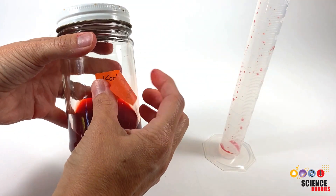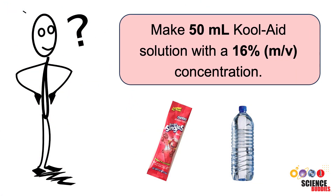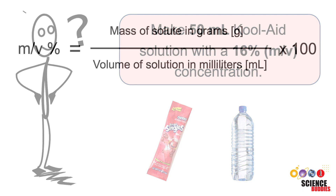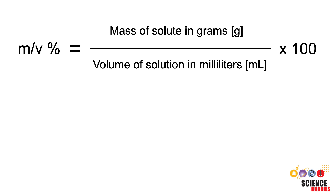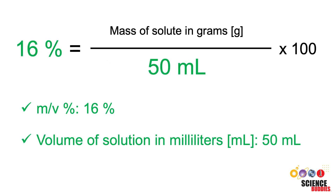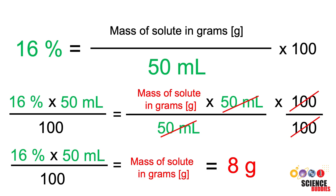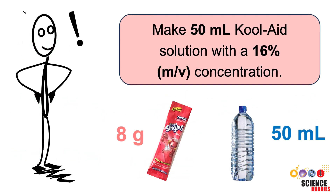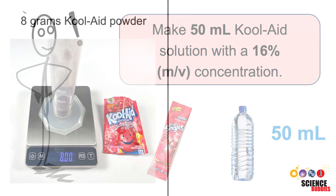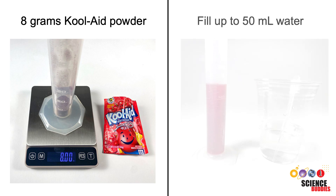It is important to label the container properly. What if our instructions say we should make a 50 milliliter solution with a 16% mass per volume kool-aid concentration? Again, we can use the mass per volume percentage equation to find out how to make this solution. We know that the mass per volume percentage should be 16%, and we need 50 milliliters of the solution. We put these numbers into the equation and solve for the mass of the solute in grams. The result is 8 grams. We now know that we must dissolve 8 grams of kool-aid into 50 milliliters of water to make 50 milliliters of a 16% weight per volume kool-aid solution. The procedure for making this solution would be the same as shown before, except that we would weigh 8 grams of kool-aid into the graduated cylinder and fill it up to 50 milliliters with water.